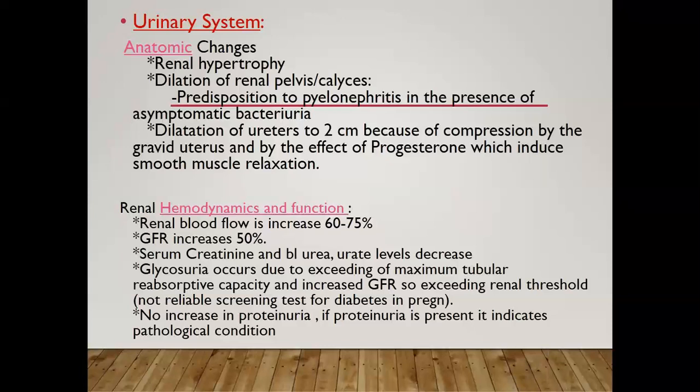Glycosuria can occur because of exceeding the maximal tubular reabsorption capacity of glucose and the increased glomerular filtration rate, so the renal threshold for reabsorption of glucose is exceeded. Therefore, we do not depend on urine glucose for detecting diabetes in pregnancy.